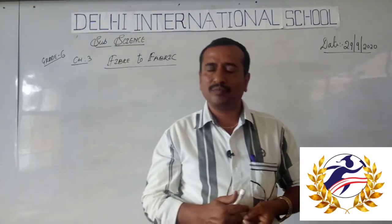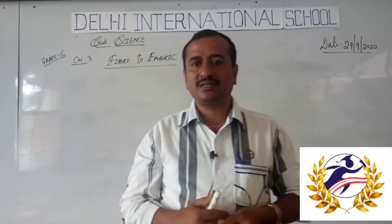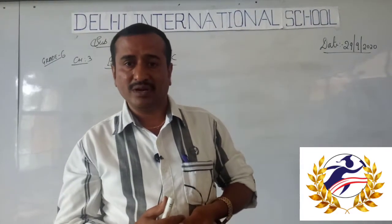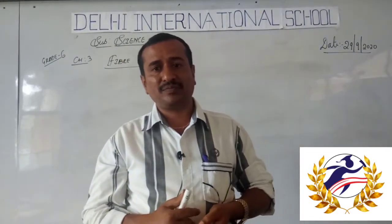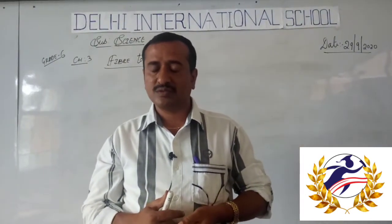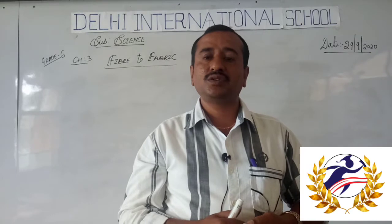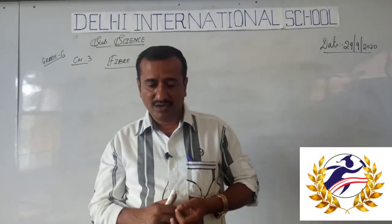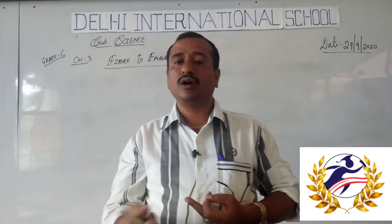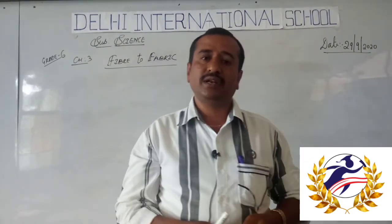You might have seen how silk is obtained — it is obtained from silkworms. You might have seen the cotton plants. Another natural fibre is wool, which is obtained from the fleece of goat, sheep, yak, or even camels. All these are called natural fibres.